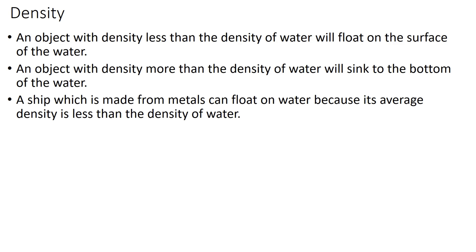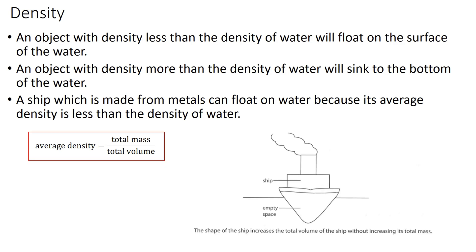A ship which is made from metal can float on water because its average density is less than the density of water. We have the formula average density equals total mass over total volume. You can look at this diagram. You can see that there is a big empty space at the bottom of the ship. So the shape of the ship increases the total volume of the ship without increasing its total mass.